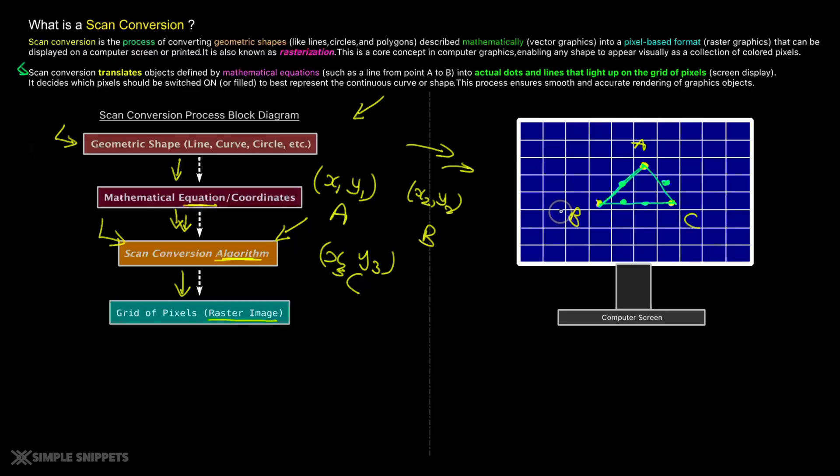So this is the whole process of scan conversion, which takes a basic mathematical shape like a simple point, like a simple line. It could be a rectangle. It could be a circle. It could be anything that has a mathematical equation. And using a certain algorithm, it converts that equation into actual raster image that you see on the screen. That is the whole process of scan conversion.